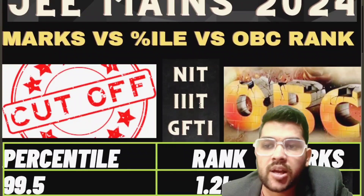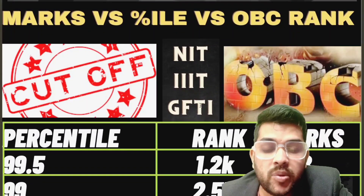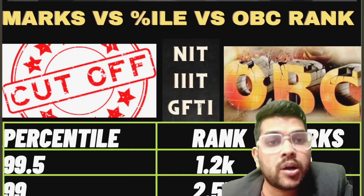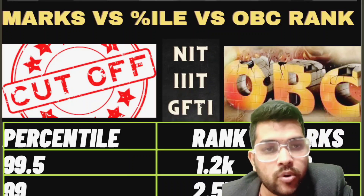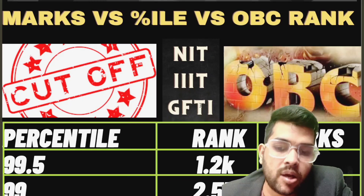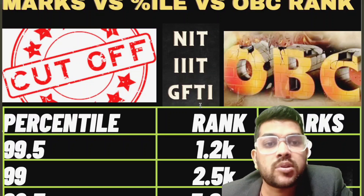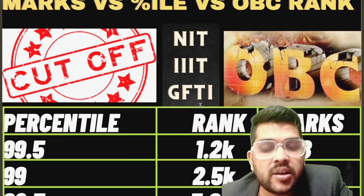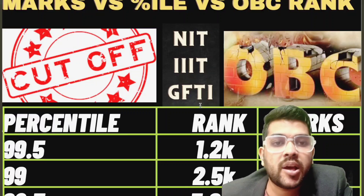For a percentile of 99.5, your marks would be 208 — this is for the first attempt of JEE 2024 and for a moderate paper. If your paper is hard, a little less marks are required; for an easy paper, a little more. For the second attempt, generally 10 to 15 marks more are required for the same percentile due to increased competition. I will provide a separate video for the second attempt as well.